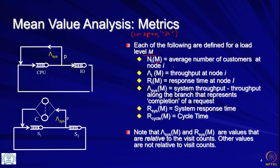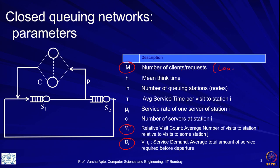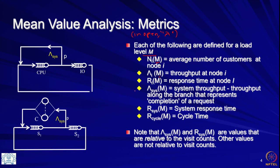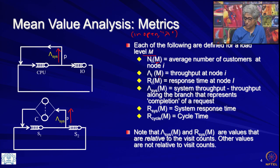n_i(M) is the average number of customers at node i at load level M. lambda_i(M) is the throughput at node i at load level M — the load level refers to the number of clients or requests in the system, so as M increases load increases. We also have the response time at each node, and the system throughput lambda_sys, which is the throughput along the branch that represents completion of a request. In closed queuing networks there is not an obvious exit, so we pick a branch that represents the system throughput.